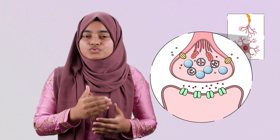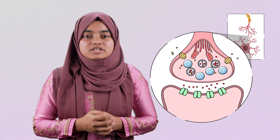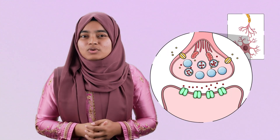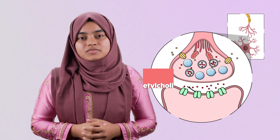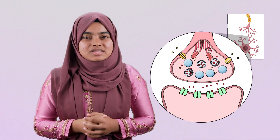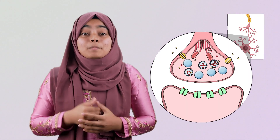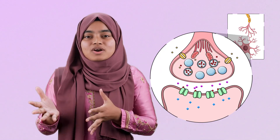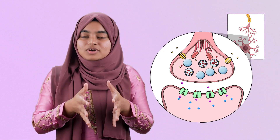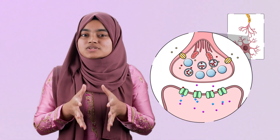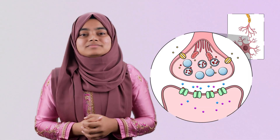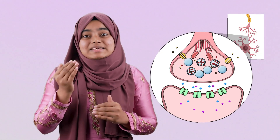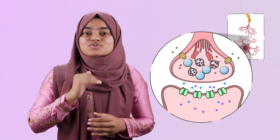Acetylcholine moves through the synaptic cleft to the membrane of the post-synaptic neuron. In the membrane of the post-synaptic neuron, some proteins are present to which acetylcholine can bind — these are called acetylcholine receptors. Acetylcholine binds to these receptors, and in response, the permeability of the post-synaptic neuron membrane increases. Sodium ions, present in higher concentration outside, enter the neuron, and potassium ions, present in higher concentration inside, exit. Action potential then develops in the post-synaptic neuron, completing the transmission.